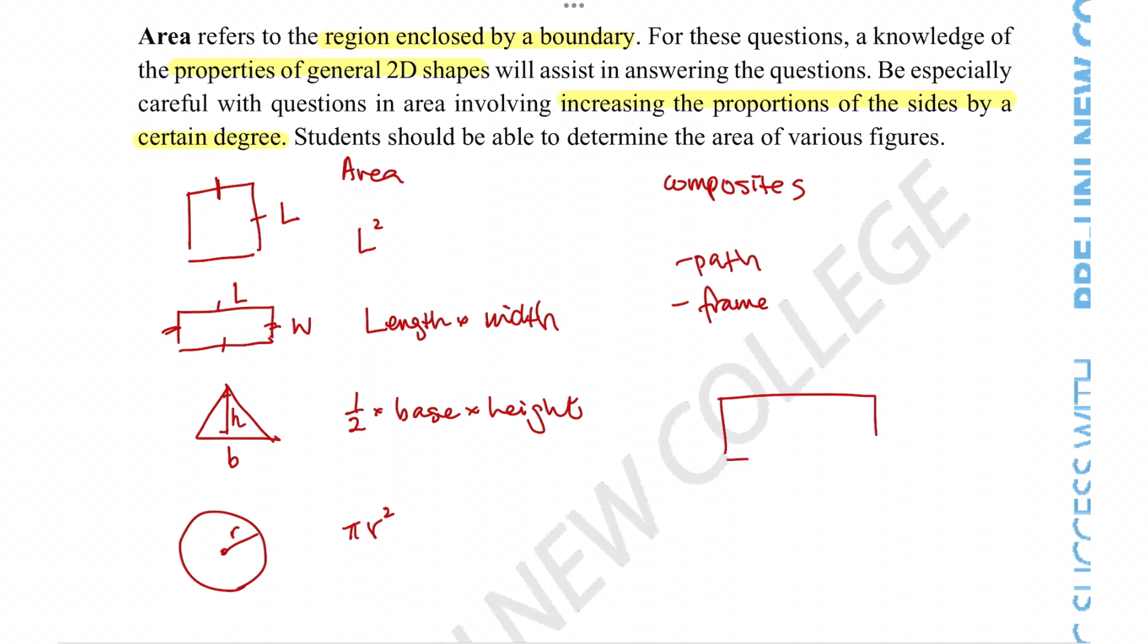But specifically for these types of questions where a path of some sort has been added around the shape, for example, if we've got a rectangle, maybe the question is that we've got a pool and we want to add a safety path around the pool. And we're told that maybe this side increases by, for example, two meters and this side increases by one meter. So if we're given the original dimensions of the pool as x and y, it's common to make a mistake where we only add the dimensions of one of the sides.